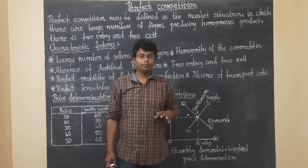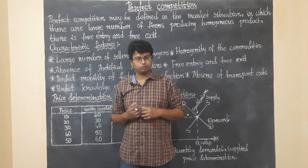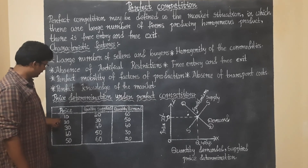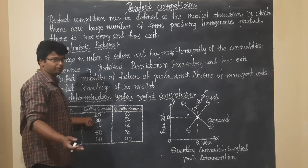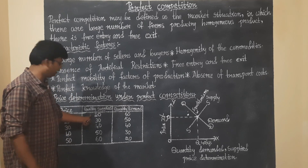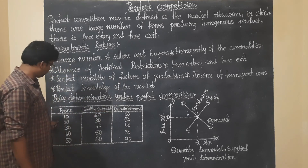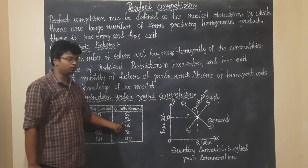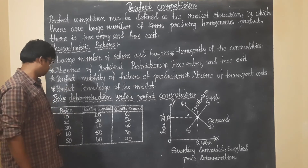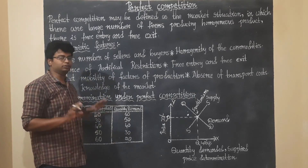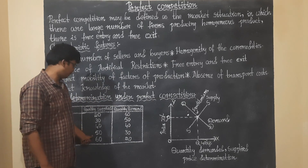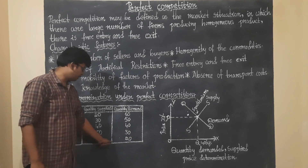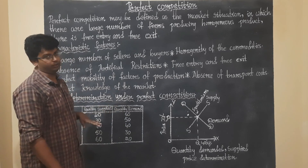Now let's look at price determination under perfect competition. Consider a table: at 10 rupees each apple, supply is 20 and demand is 60. At 20 rupees, supply is 30 and demand is 50. At 30 rupees, supply is 40 and demand is 40. At 40 rupees, supply is 50 and demand is 30. At 50 rupees, supply is 60 and demand is 20.